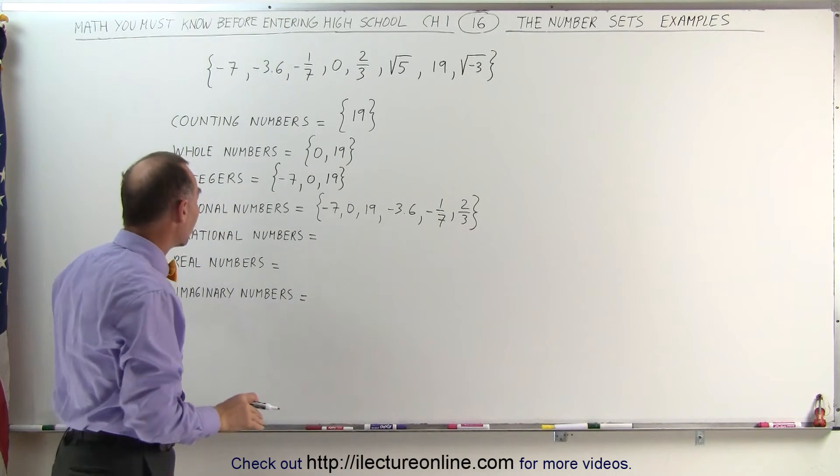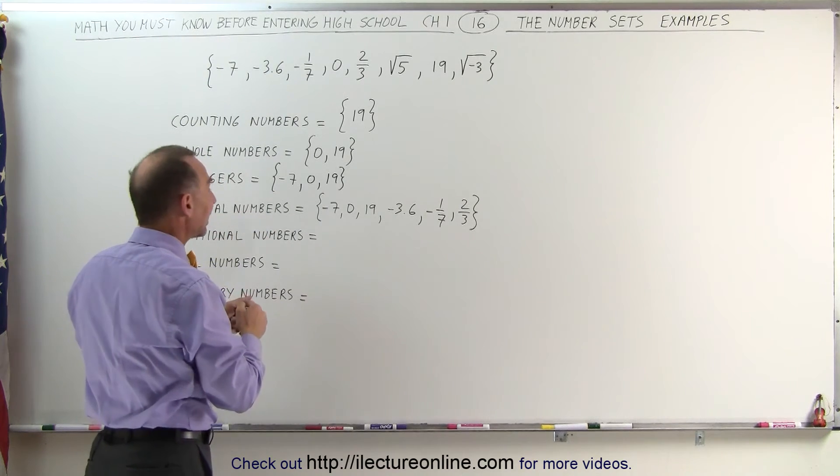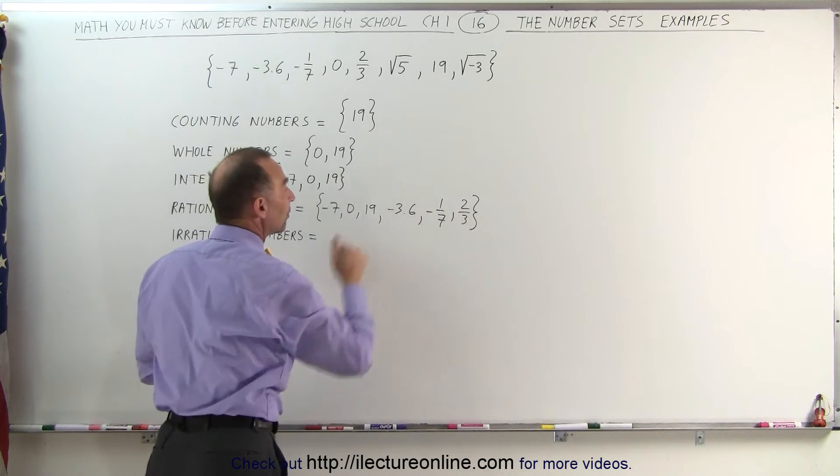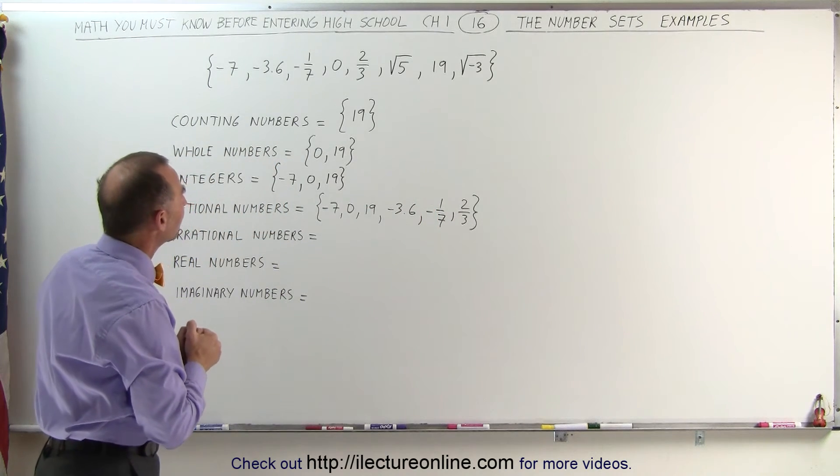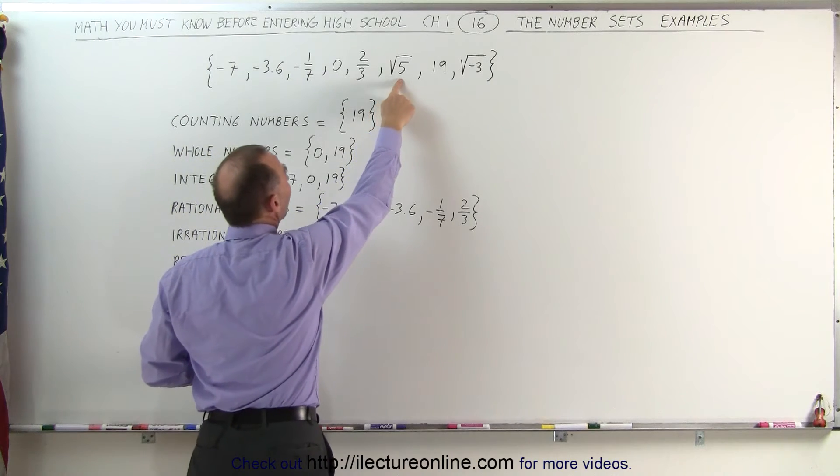The irrational numbers are the numbers that are not rational. In other words, we cannot put them in the form A over B. Is there any there? Well, there is. It's the number the square root of 5.